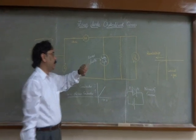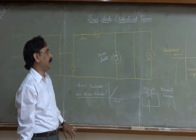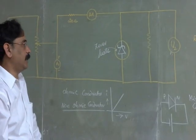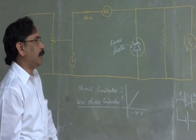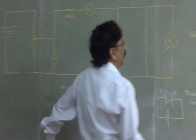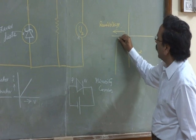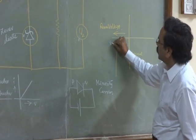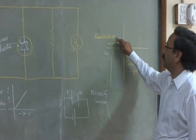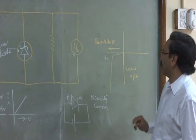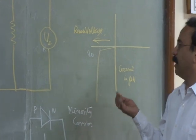The Zener diode is operated in reverse bias and we plot a graph between current and voltage. By increasing the voltage, we see that current remains almost very small — measurable only in micro-amperes. When we increase the reverse voltage, current increases very slightly. But at a particular voltage, called the breakdown voltage, the current increases abruptly even though there is no further increment in the applied voltage.